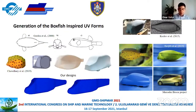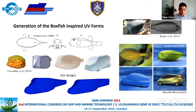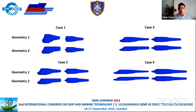Here you see the boxfish forms from the literature and our forms shown in dark blue. We were inspired by these geometries and generated two underwater vehicle forms inspired by geometries from the literature. Then, by rescaling these forms, we generated new geometries. The rescaling process was carried out on the x and z coordinates, so we changed the length and height while keeping the width of the forms the same. Therefore, from the shortest to the longest, all forms used in the study have the same displacement for comparison purposes.